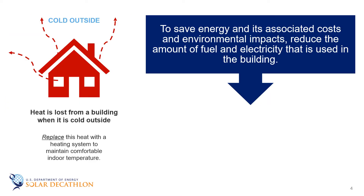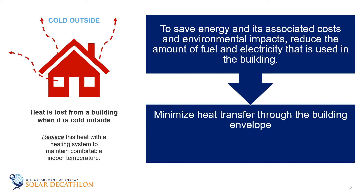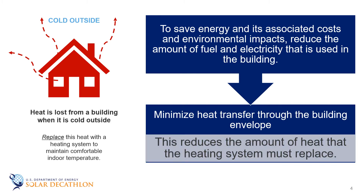To save energy and its associated costs and environmental impacts, we need to reduce the amount of fuel and electricity used in the building. In order to save energy, we need to minimize the amount of heat transfer through the building envelope — that reduces the amount of heat the heating system must replace. We are concerned about the environmental impacts of fuels, including electricity, consumed by heating and cooling systems, as well as the cost to operate our buildings. There is also the heat rejected into the environment — all the fuel we burn and electricity we consume ultimately ends up as heat that leaves the building and enters the environment.